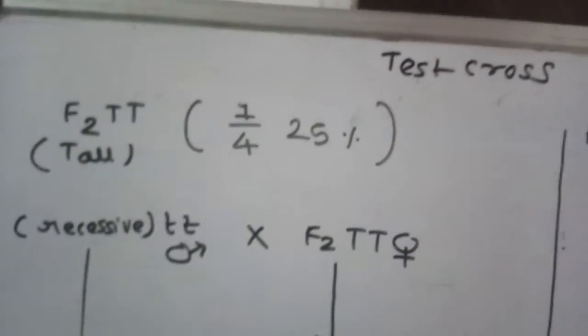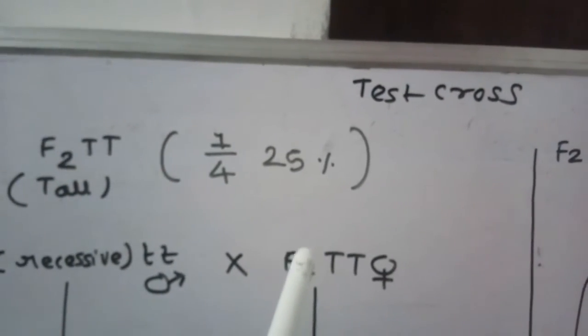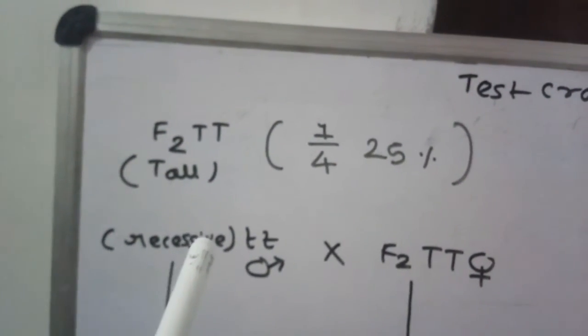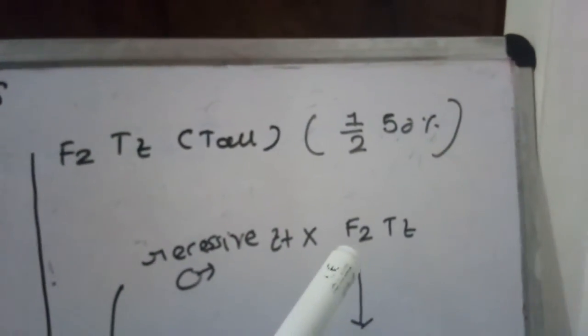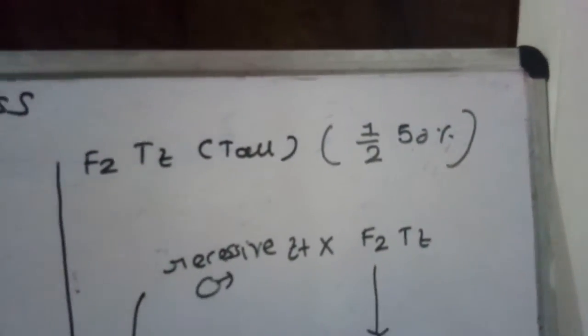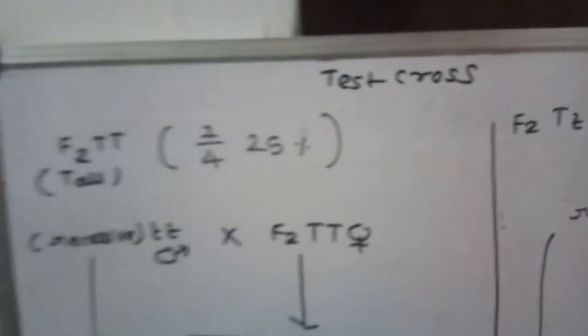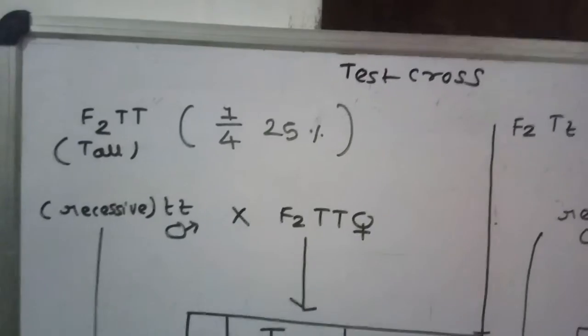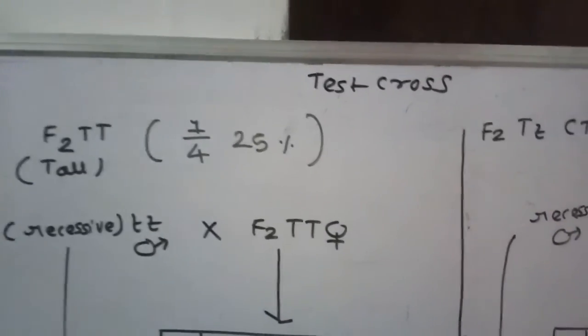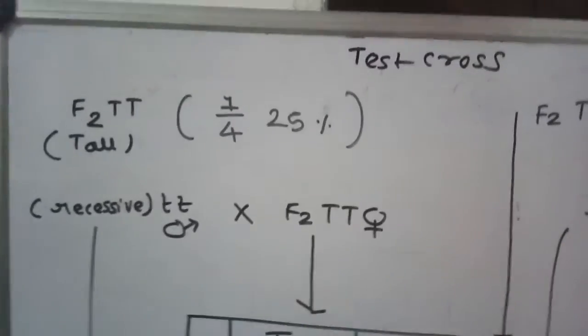Test cross will be performed with the F2 plant. The F2 plant will be test crossed with small t small t, that is the recessive plant. Test cross is confirmed with a recessive plant.